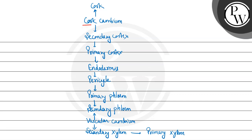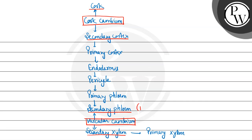On the other side, vascular cambium makes secondary xylem. On the inner side of secondary xylem is present primary xylem. So the first secondary tissue — cork cambium made cork and secondary cortex, and vascular cambium, which is a secondary meristem, made secondary phloem and secondary xylem. The question asks about the layer between secondary phloem (bark) and secondary xylem (wood) — that is the vascular cambium. And periderm is the outer part including cork.